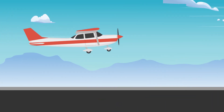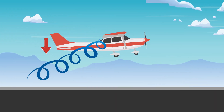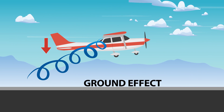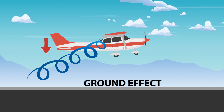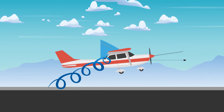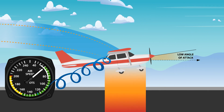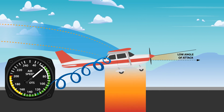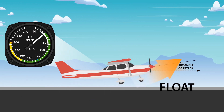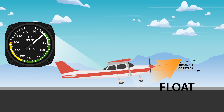During the landing phase of flight, the aircraft is brought into ground effect where a reduction of induced drag occurs. With a constant angle of attack and airspeed maintained in ground effect, the aircraft will tend to float over the surface.